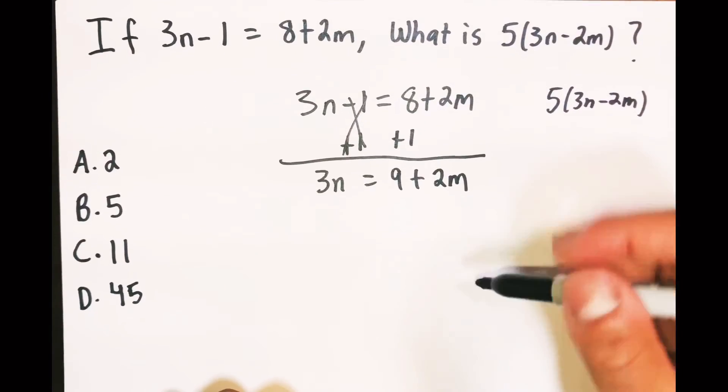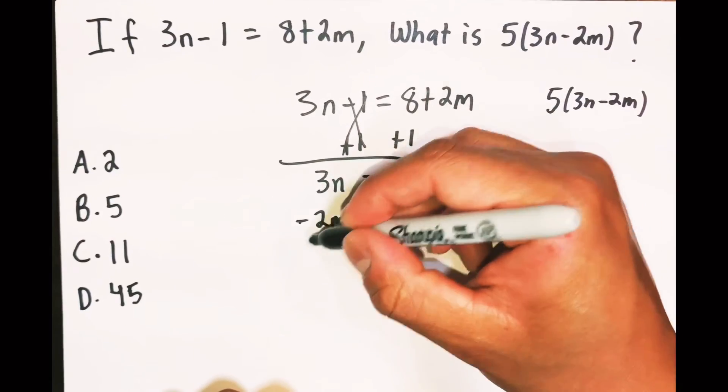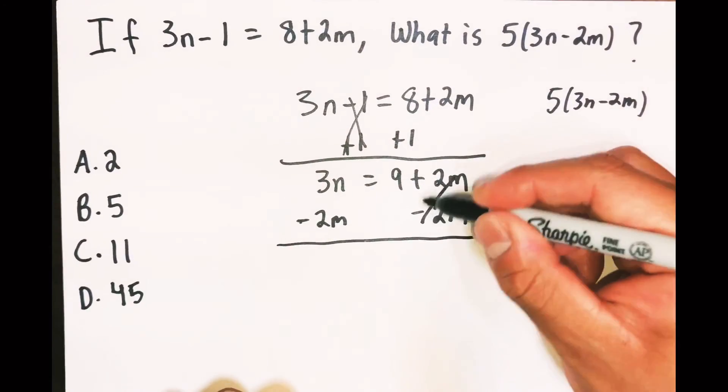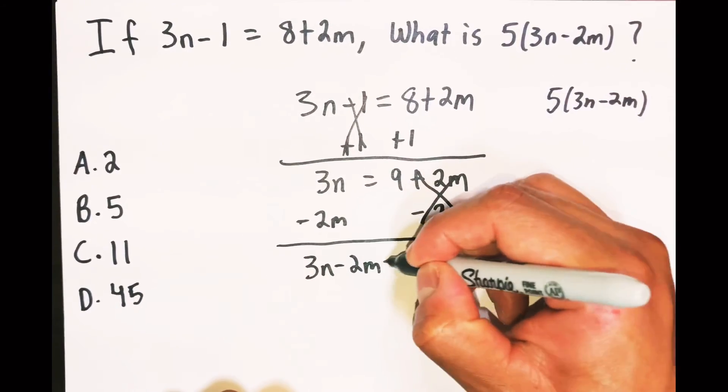Now what I can do is I'm going to move the 2m on this side and move the 2m over here. That's going to get rid of the 2m, and on this side I have 3n minus 2m equals 9.